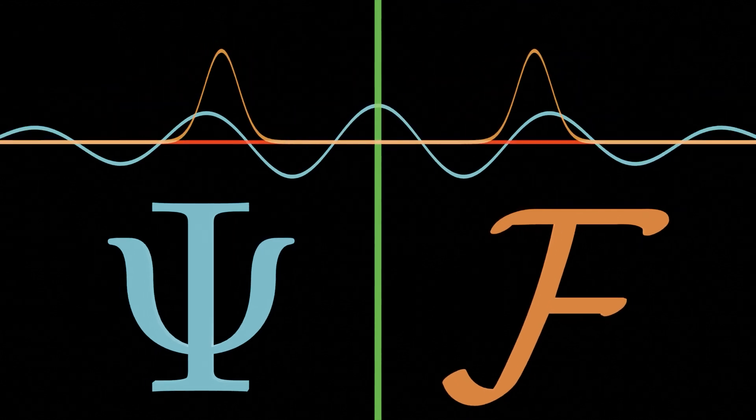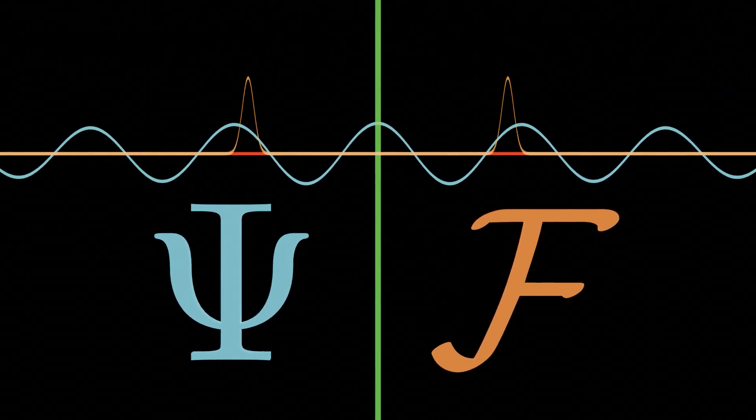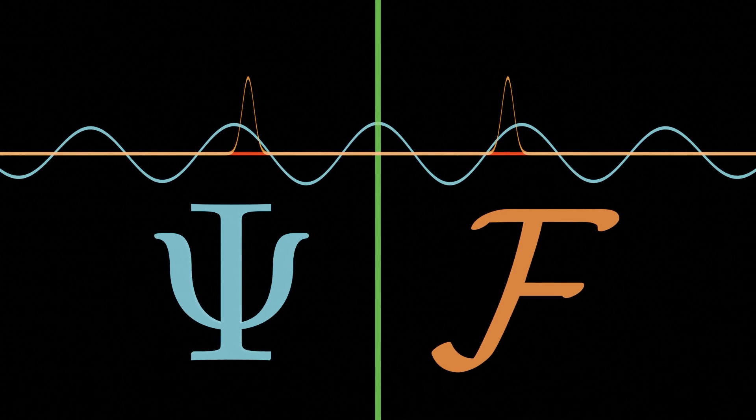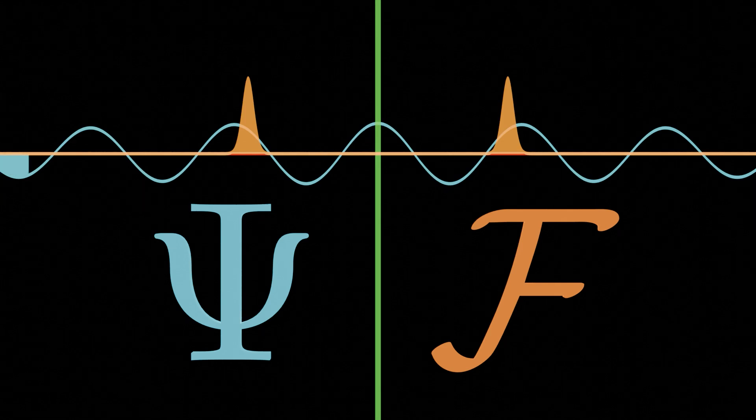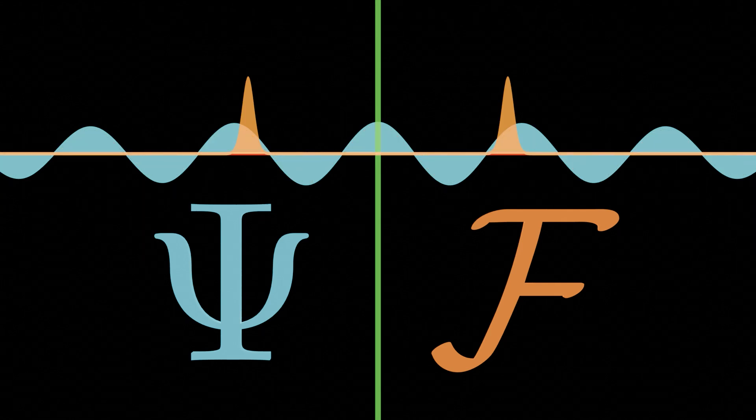Now you can see that as our wave gets more and more localized, we are more and more uncertain about the wavelength, which, I mean, it makes sense. Look at this wave. You know where the wave is. It's right here. But what about the wavelength? Well, if you had to guess its wavelength, it would be a challenge, because there aren't even any peaks, and as such the Fourier transform is very delocalized.